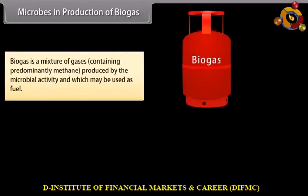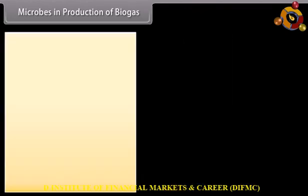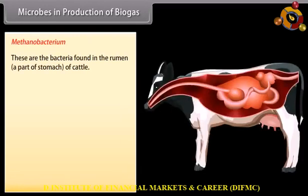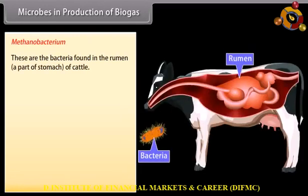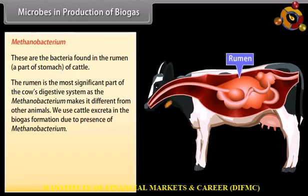Microbes in production of biogas. Biogas is a mixture of gases containing predominantly methane, produced by microbial activity, and which may be used as fuel. Cow dung is the main source for biogas, as the bacteria in dung have more potential than others. Methanobacterium are bacteria found in the rumen, a part of the stomach of cattle. The methane bacterium makes cattle different from other animals. We use cattle excreta in biogas formation due to the presence of Methanobacterium.